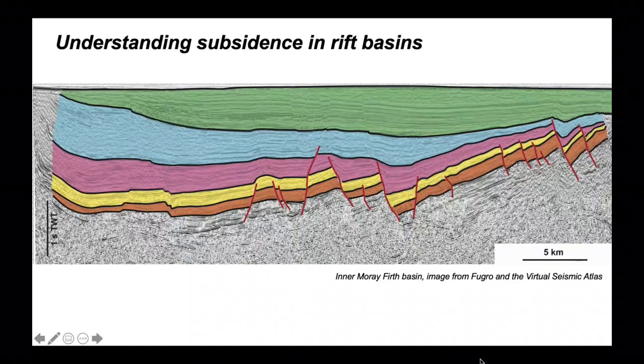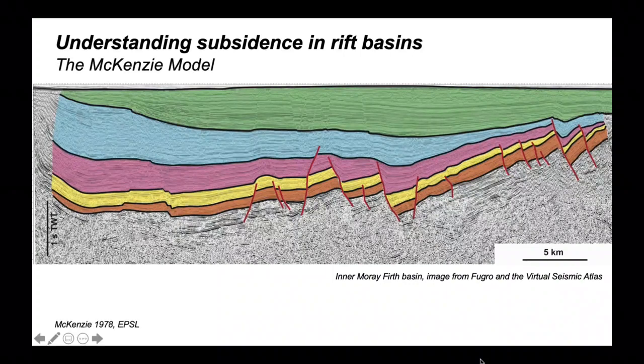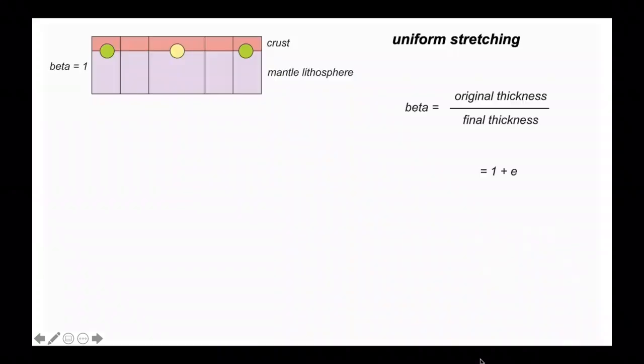So why is this? In this presentation we'll explore the model developed by Dan McKenzie to explain these relationships. The model is tectonically simple: we'll assume that the crust and mantle lithosphere stretch the same amount.